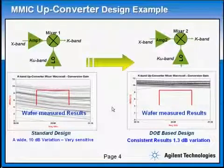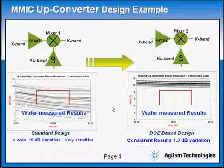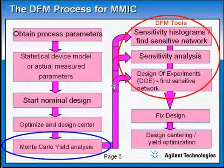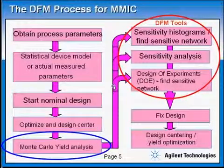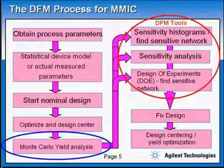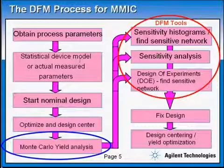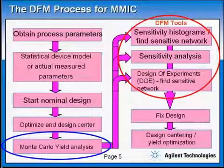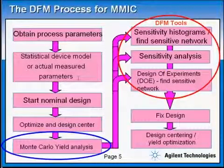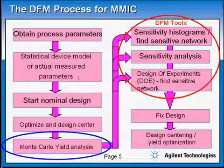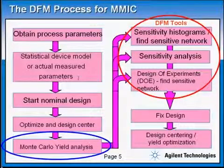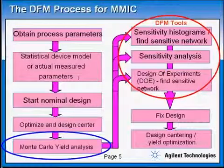This clearly illustrates the power of DFM design technique. Let me now show you the steps in a typical DFM design process. First, we obtain the process parameters. We must know how these parameters change in the fabrication process. For example, capacitors and resistors change plus or minus 10% due to process variation. Width of microstrip lines change plus or minus half a micron due to process variation. These are important to obtain so you can do your DFM analysis as you're designing your circuit.